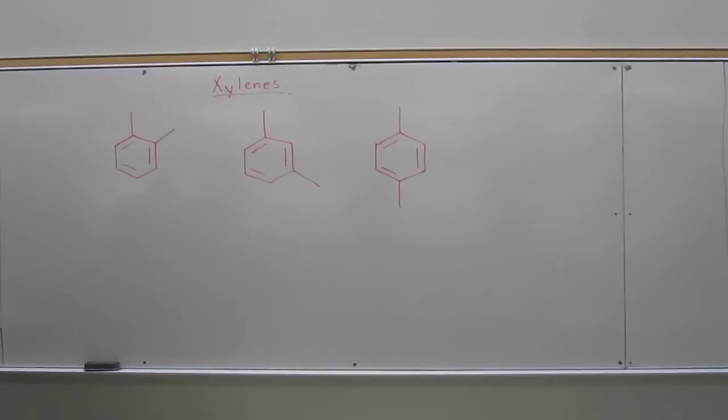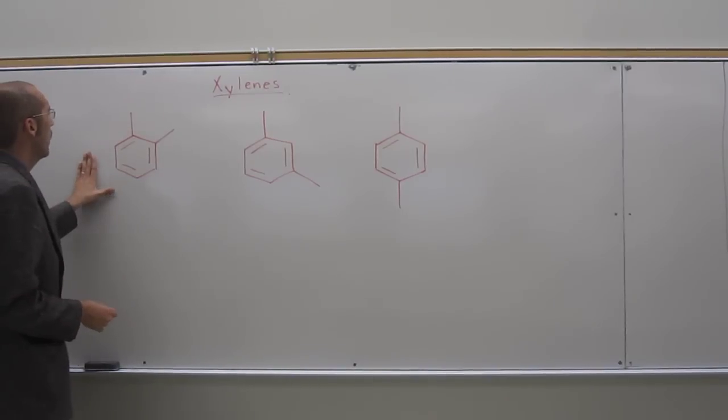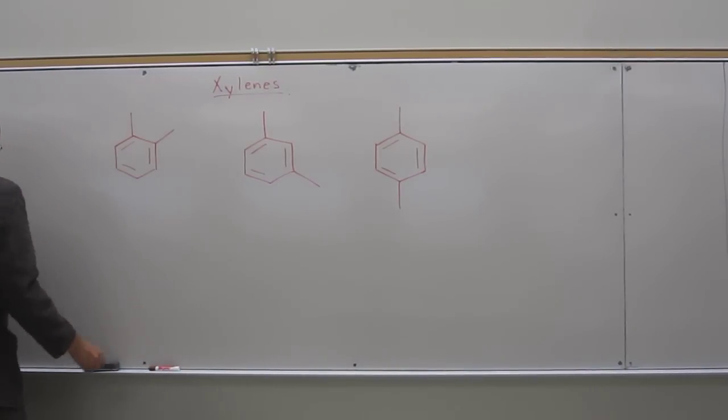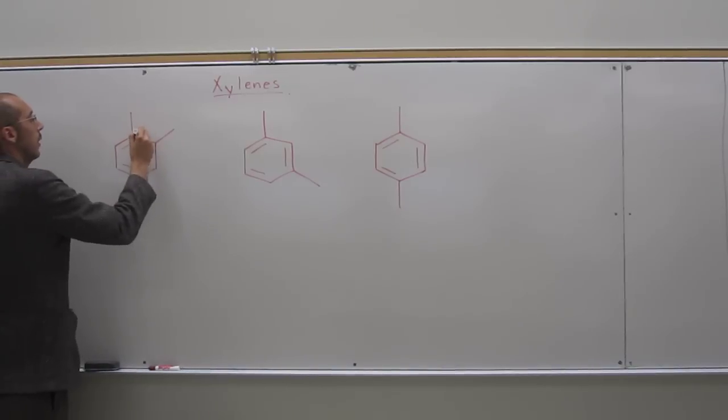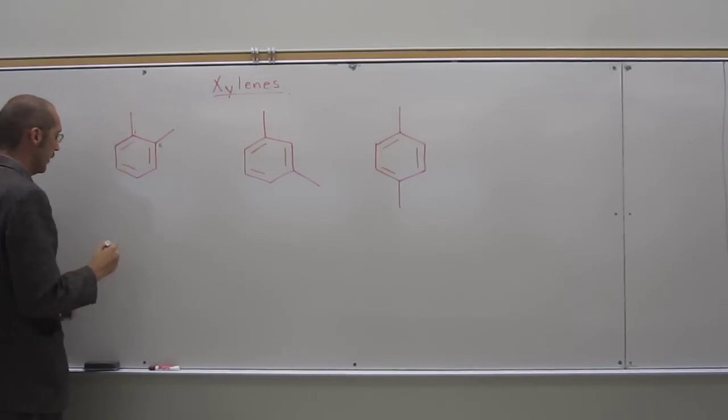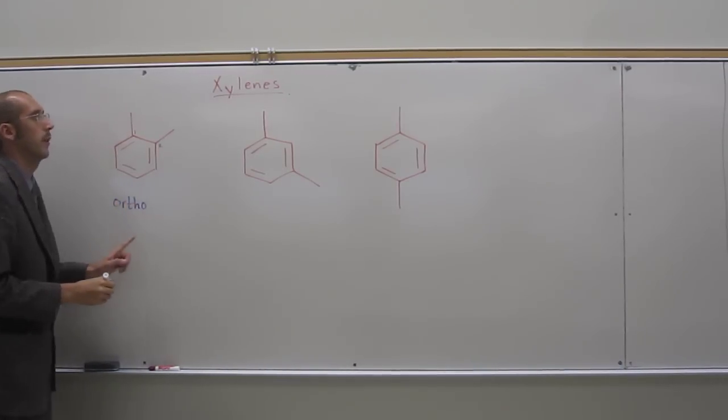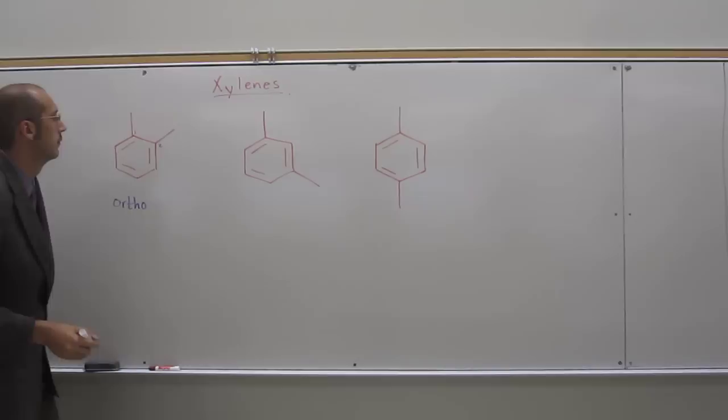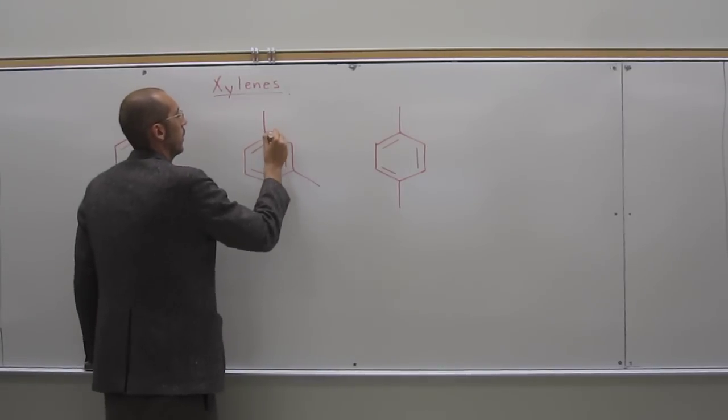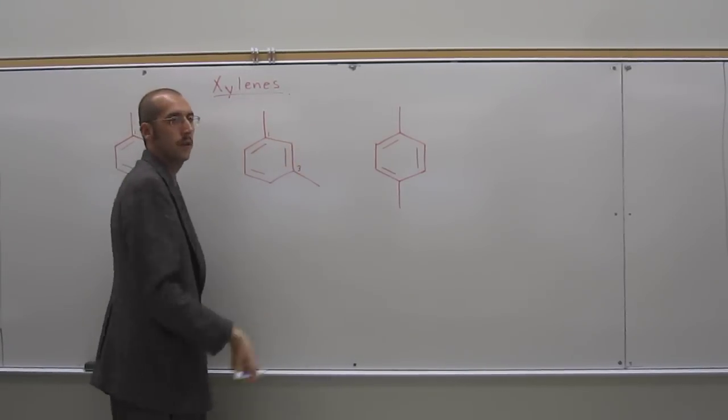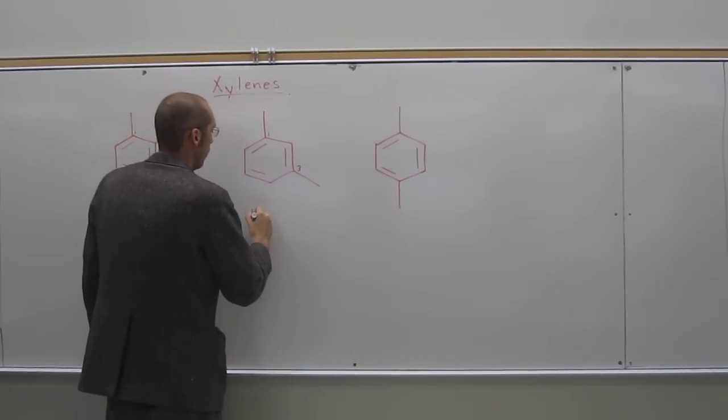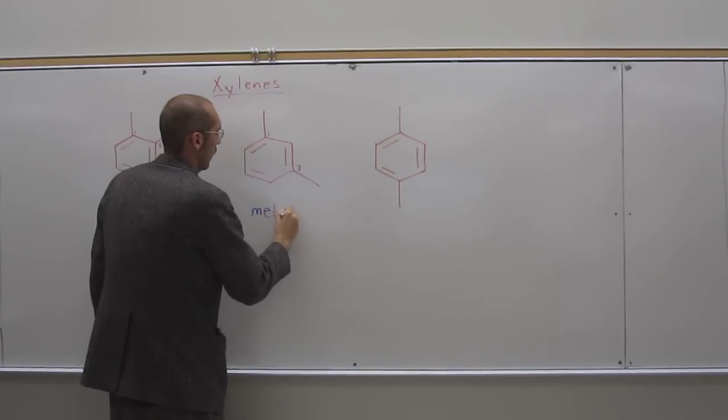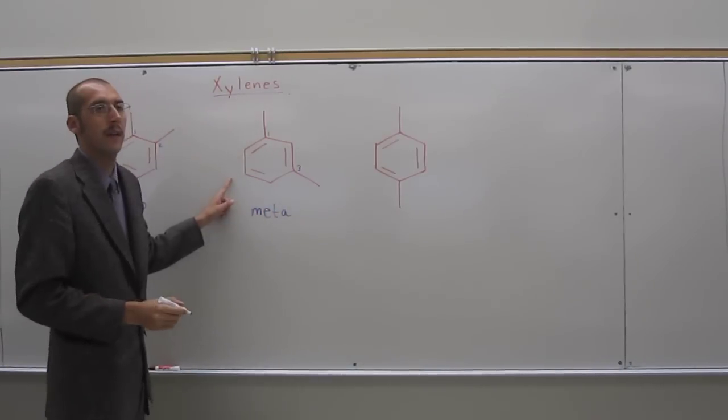So the name, if you've got the substituents in the one, two position, it's called ortho. So this would be ortho xylene. If you've got it in the one, three position, it's called meta. So this is meta xylene.